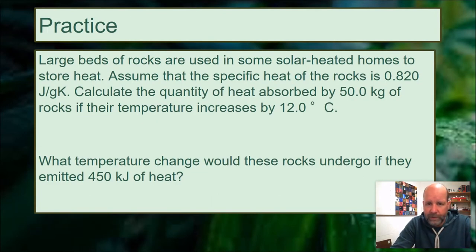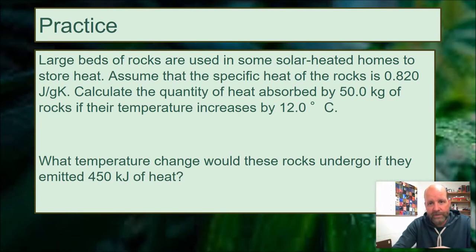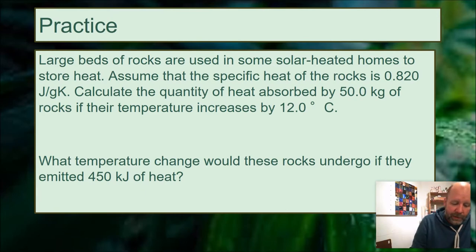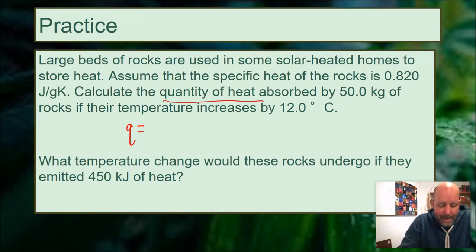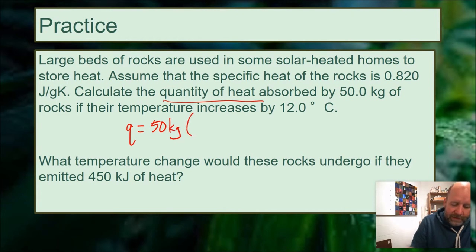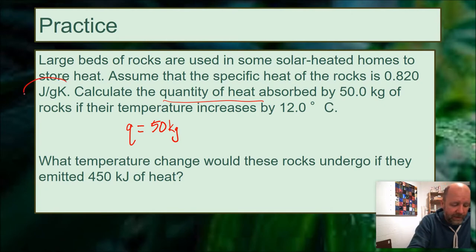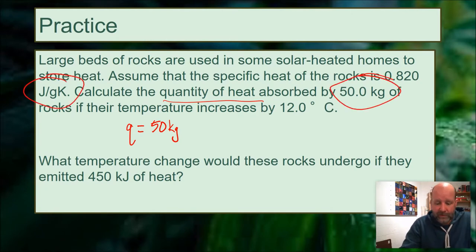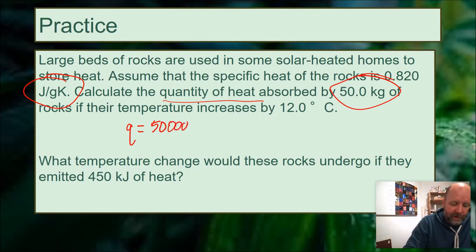Got a practice problem — figure out what q, c, m, and ΔT are, pause the video and solve it. This one's pretty straightforward; they want the quantity of heat, so we're finding q. q = cmΔT. We've got 50 kilograms for mass — but notice we have grams in c and kilograms here, so we need to make sure these match. I'm going to change this to 50,000 grams.